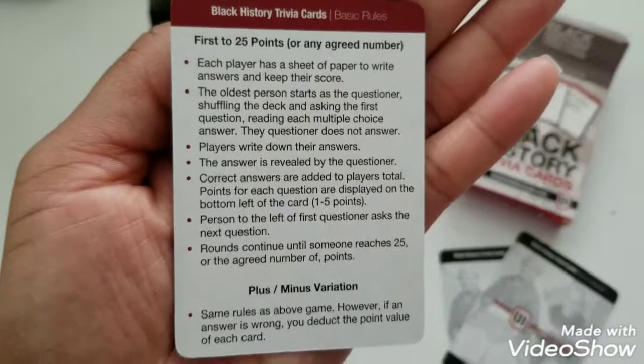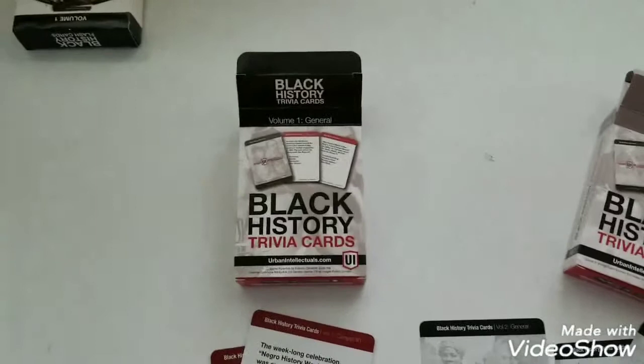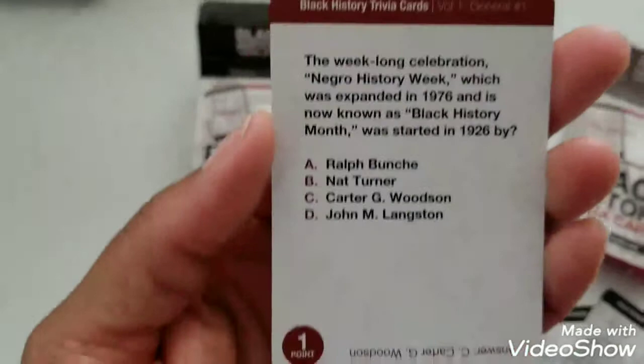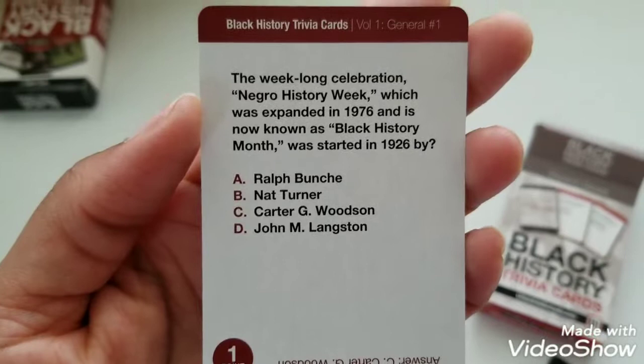Let's stick with how they told us to play the game. In deck one, here's an example of what a card would say. They give you the points at the bottom — it tells you how many points you earn. We just talked about this with my son. The answer is Carter G. Woodson. And then if you flip the card over, it confirms: Carter G. Woodson.